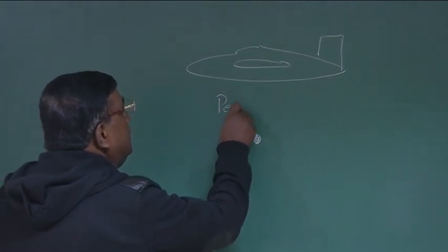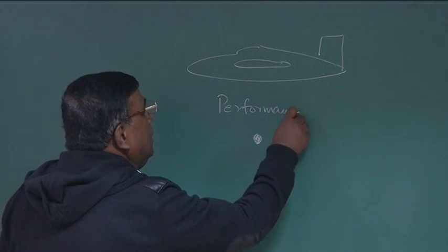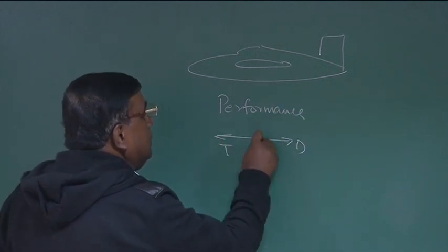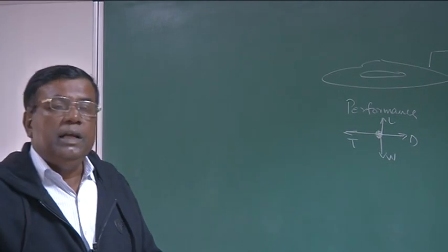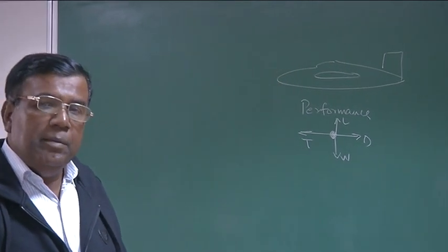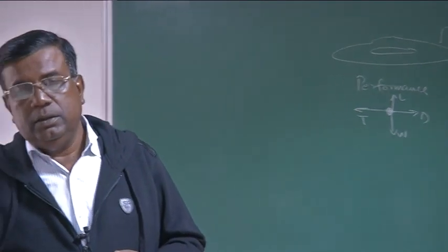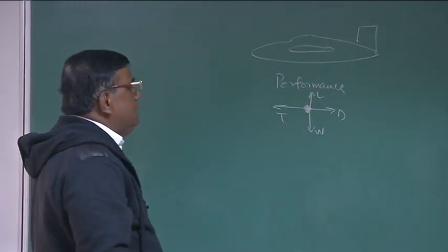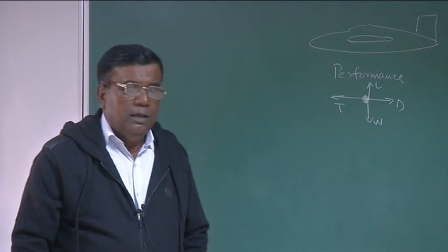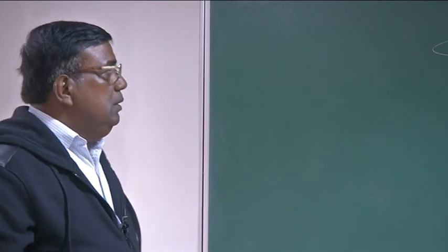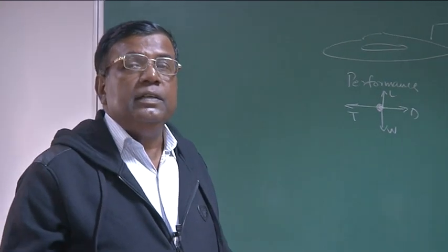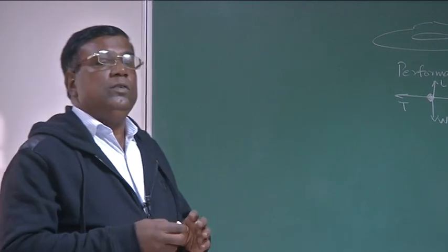In performance, this diagram was good enough: thrust equal to drag, lift equal to weight. We took each component — drag, lift, thrust, and weight — and tried to understand their implication in terms of airplane performance, which are primarily takeoff, climb, cruise, loiter, landing, and maneuver. We also wanted to understand what the ratio of L by D means, the significance of CL by CD maximum, but nowhere explicitly did we talk about any rotational motion.